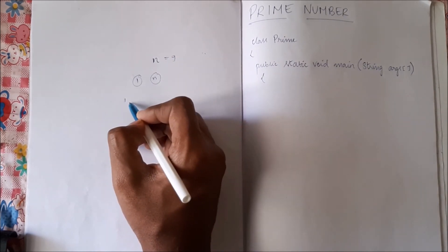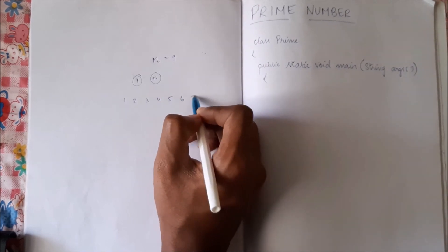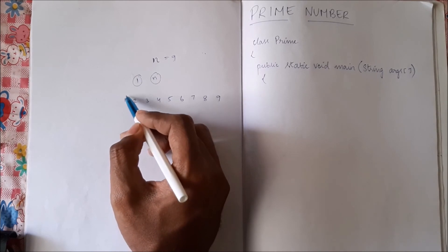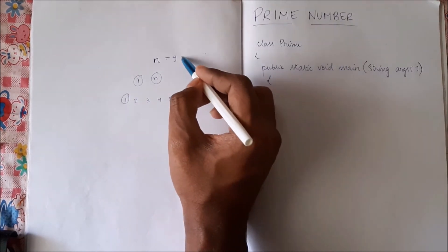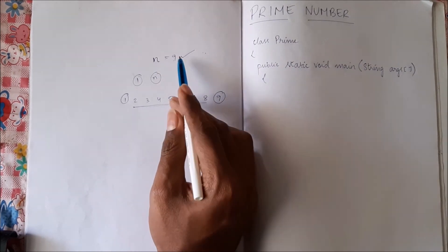So let us say 1, 2, 3, 4, 5, 6, 7, 8, 9. If the number is divisible by only 1 and only 9, then n is prime. If it is divisible by any other number in between, then it is not prime.